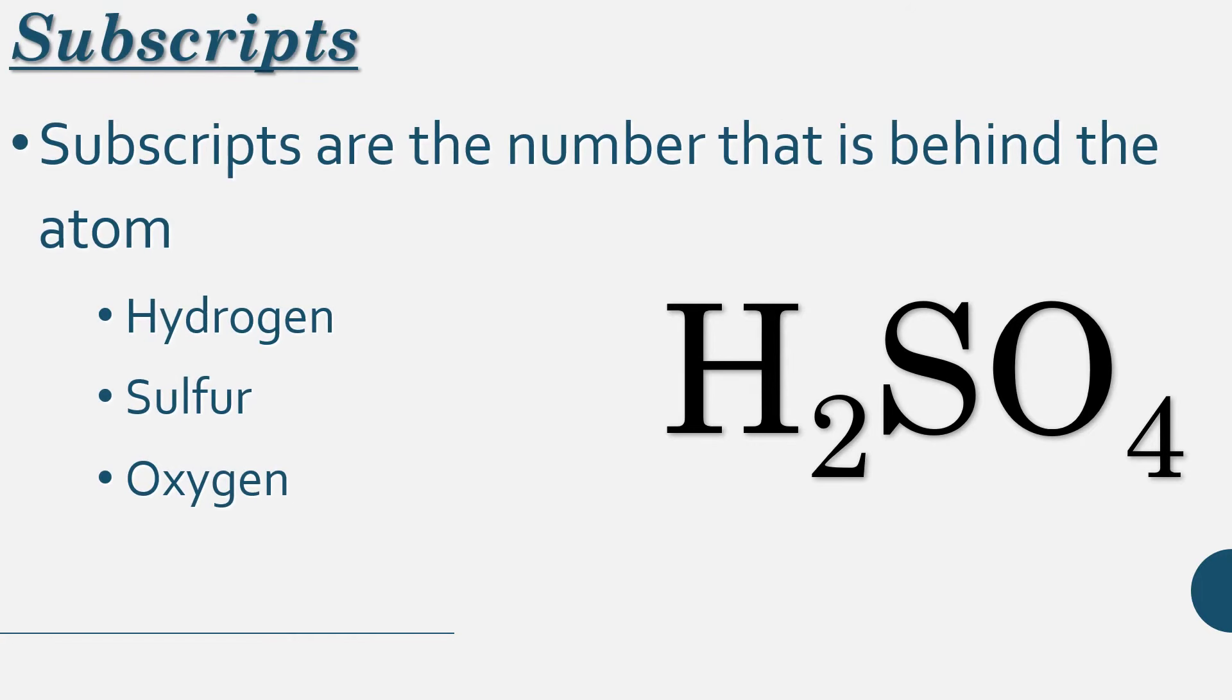Our next element of counting atoms is the subscripts. We've been able to identify what elements are there, but now we need to figure out how many subscripts there are. Subscripts are the number that is behind the atom. So you have a 2 and a 4. What this is telling us is that hydrogen, there are 2 of them, and oxygen, there are 4. And since sulfur doesn't have anything behind it, it's a 1.